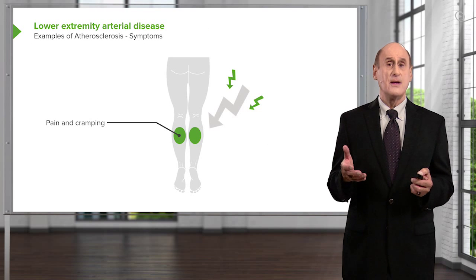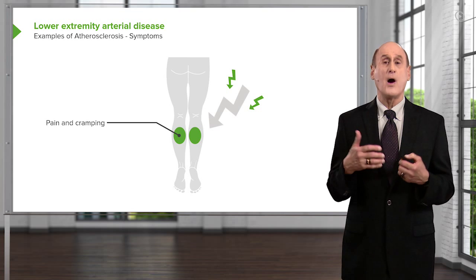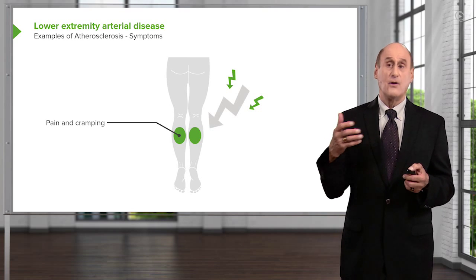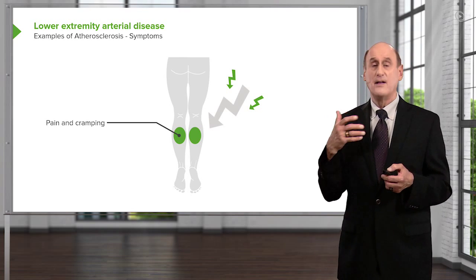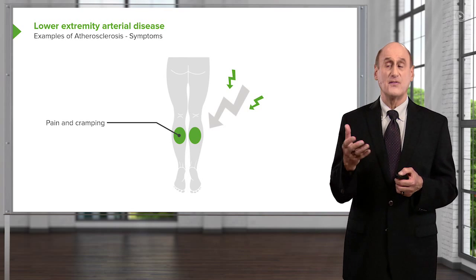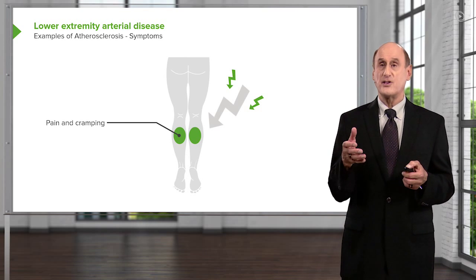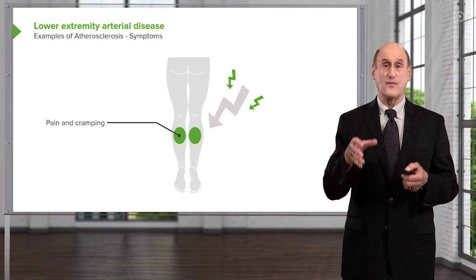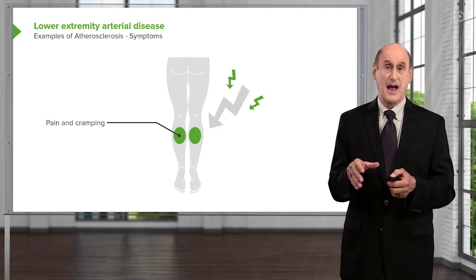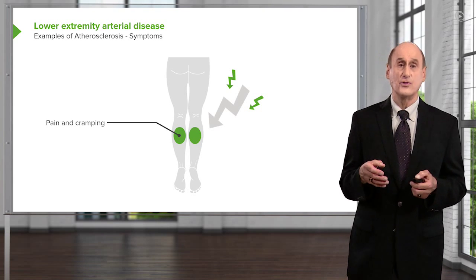Why does that happen? Because during walking the muscle requires more blood flow, and when not enough blood flow gets through, the muscle starts to give a signal of pain. When the patient stops, the blood flow gets through again, the muscle demand goes down, and the pain goes away.